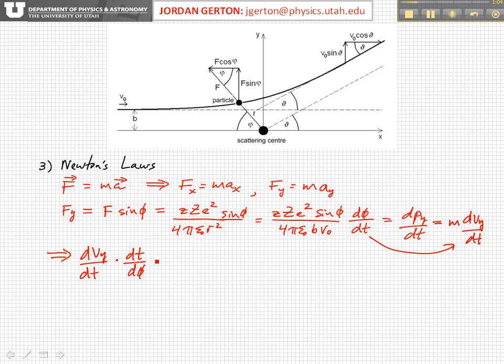This is equal to little z, big Z, e squared, sine of φ, from up there, divided by 4π ε₀ b v₀ m. Brought the m to that side, and now we notice that those cancel, and so this is equal to dvy/dφ.